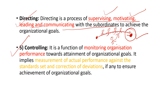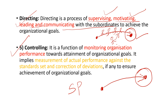The fifth and last function is controlling. What do we mean by controlling? The organization has to watch whether it is moving toward achieving its predetermined organizational goals. Management sets a certain standard performance for the organization, measures the actual performance, and then compares it with the standard performance. Then you have to find out the degree of deviation.